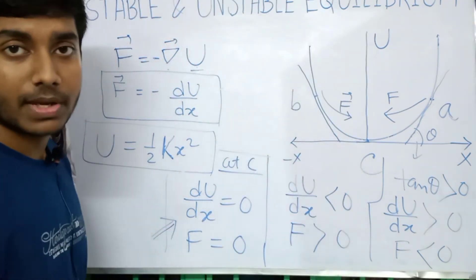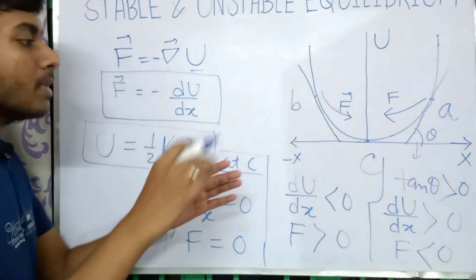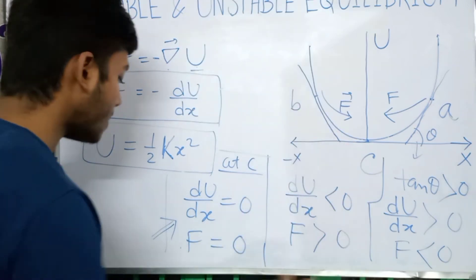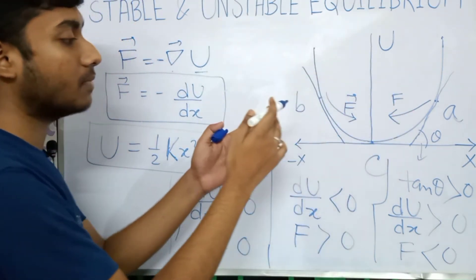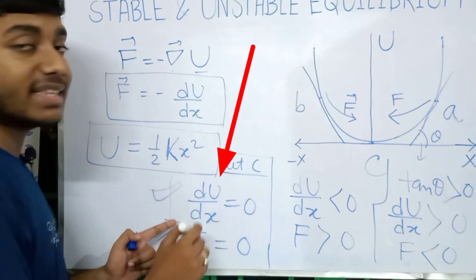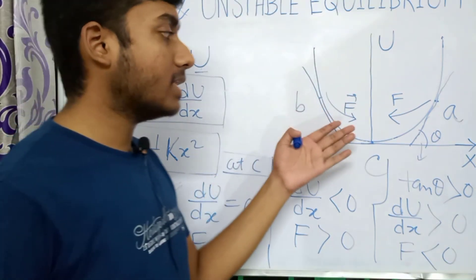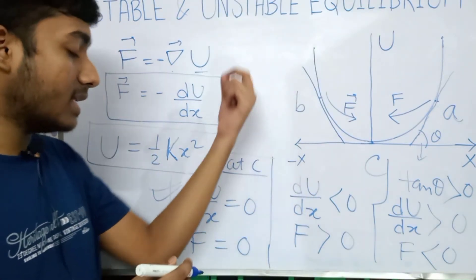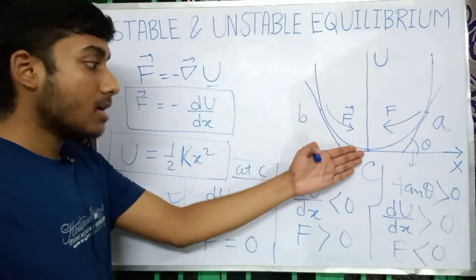It is clear that C is the point of equilibrium since F equals zero there. And for any system, where the derivative of the potential energy is zero — that is where the potential energy curve is at a maximum or minimum — those are the positions of equilibrium. At the positions of maximum or minimum of the potential energy curve, equilibrium occurs.